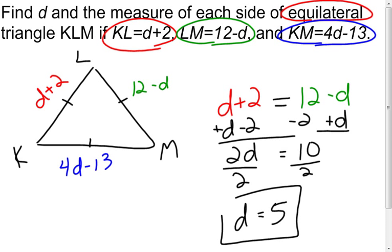Now that was part of the answer to our question or to our problem, but the other part it wants us to find the length or the measure of each side. So I could just come over to any one of these and plug that 5 in and being they're all equal in length, I really only have to plug it into one. But I'm going to pick the one that I think is the easiest and I think the red one is the easiest. So I'm going to put my 5 in there, add on the 2 and find out that the length of that side is 7.